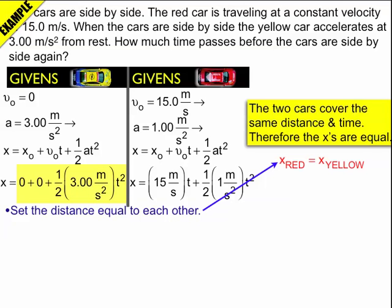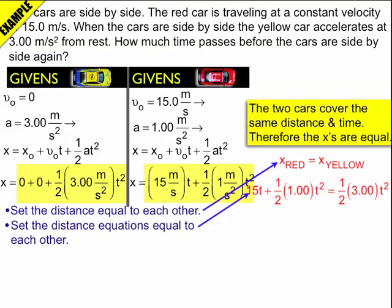Well, if the distances are equal to each other, so are the equations that describe the distances. For the yellow car, it's the equation on the left. For the red car, it's the equation on the right. So what I can do is just set these two equal to each other since the x's are equal to each other.